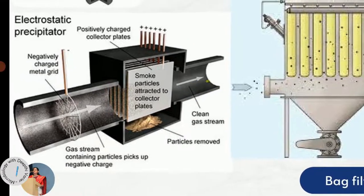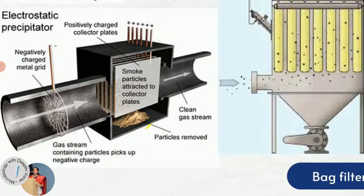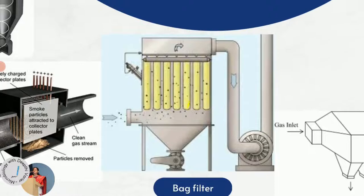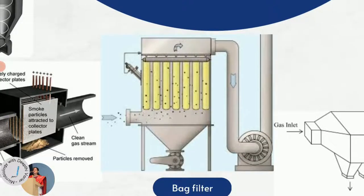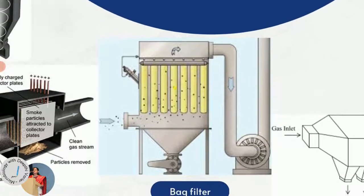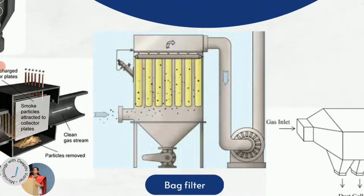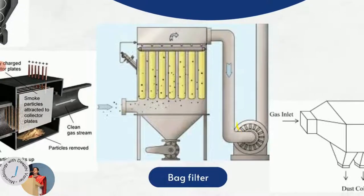The third device is a bag filter, which is very simple and commonly used in cement plants, stone crushing units, and mining industries. A fabric or cloth bag with small pores filters the dust-laden gas — the dust particles are retained on the bag while clean air comes out. These are the simplest ones, called bag filters.